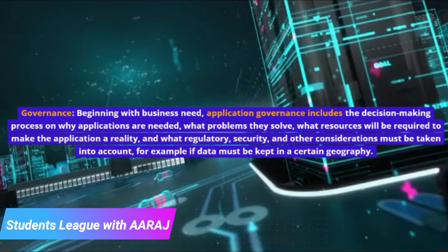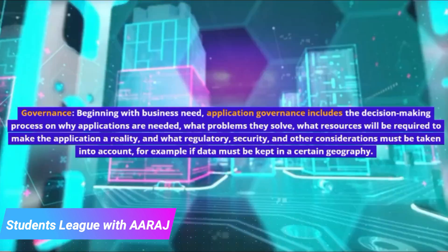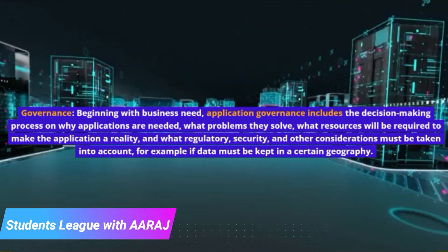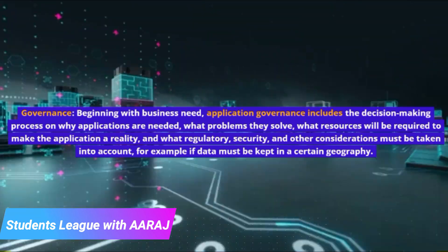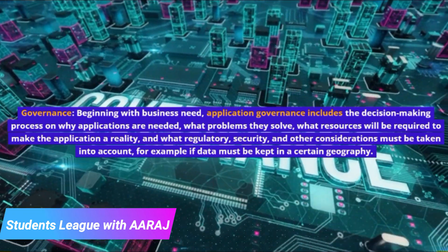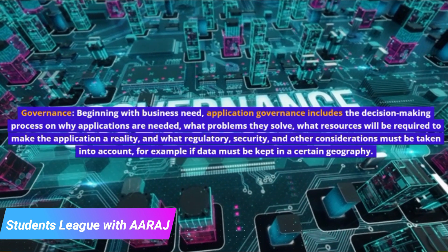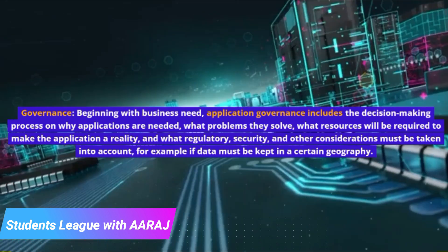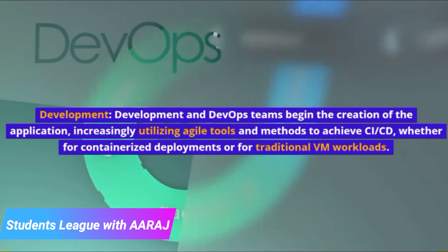The first phase is Governance, beginning with business need. Application governance includes the decision-making process on why applications are needed, what problems they solve, what resources will be required to make the application a reality, and what regulatory, security, and other considerations must be taken into account — for example, if data must be kept in a certain geography.